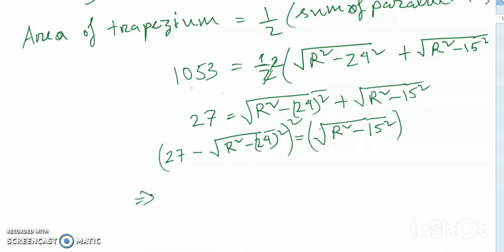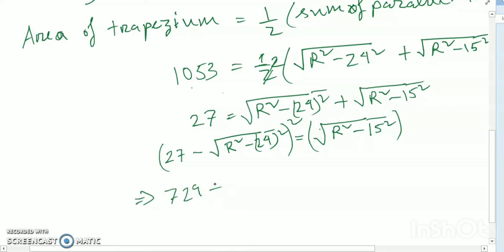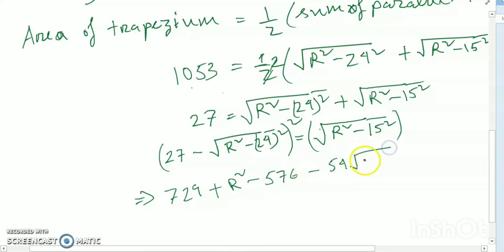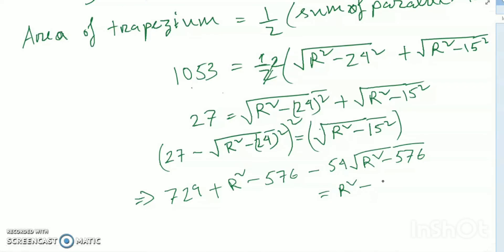After squaring: 729 + r² − 576 − 54√(r² − 576) = r² − 225. Here 24² = 576 and 15² = 225. Simplifying, the r² terms cancel out.